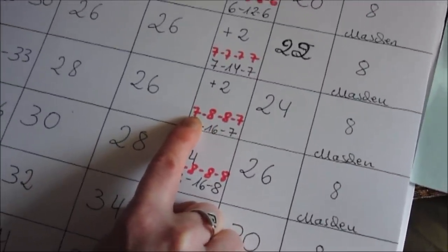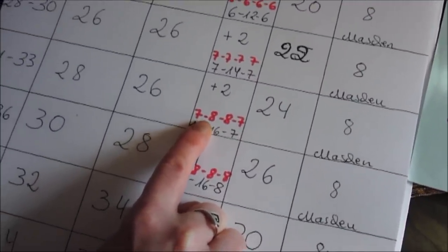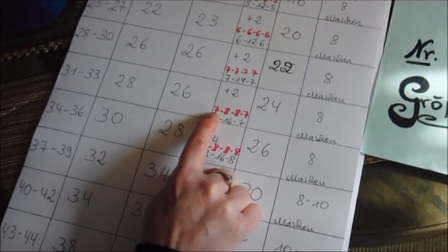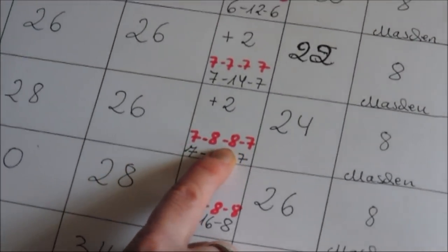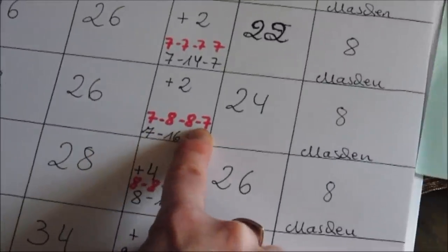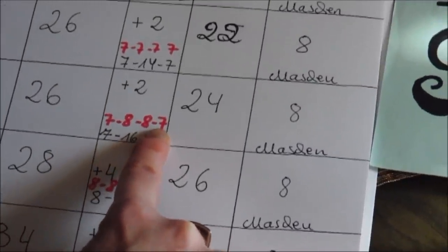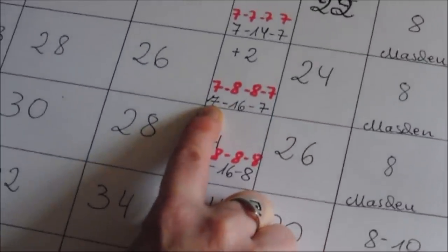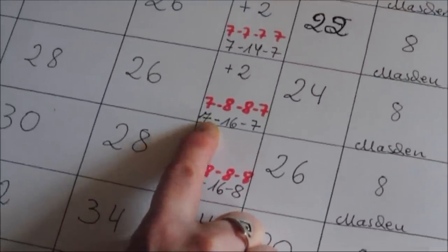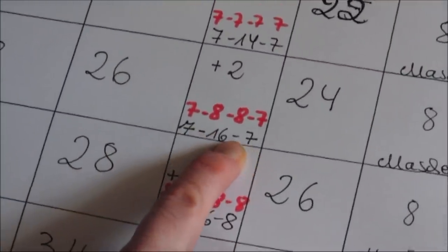Entweder strickt ihr mit vier Nadeln plus die fünfte zum Stricken - das wären dann sieben, acht, acht, sieben Maschen - oder ihr strickt mit drei Nadeln worauf die Maschen sind, und eine Nadel zum Stricken.